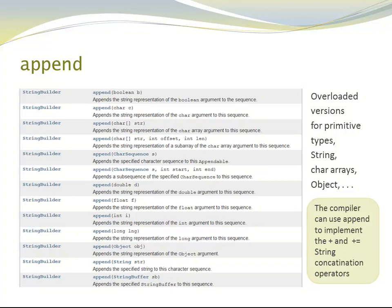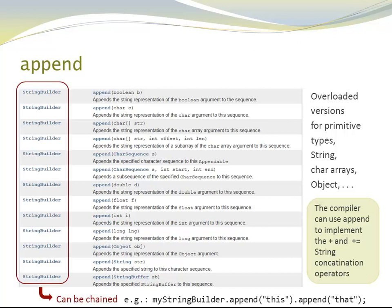The compiler can use append to implement the plus and plus equals string concatenation operators. Also notice the return types. All of those overloaded append methods return StringBuilder. This allows chaining.